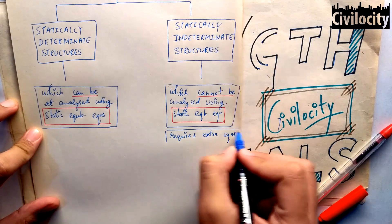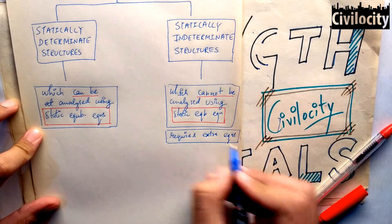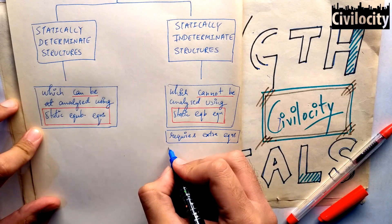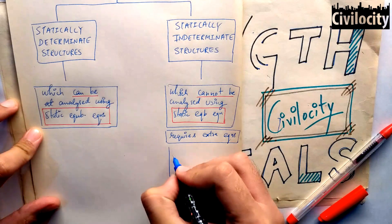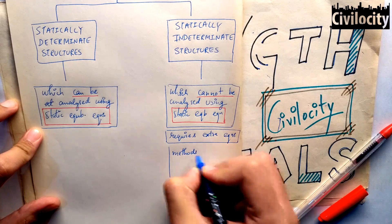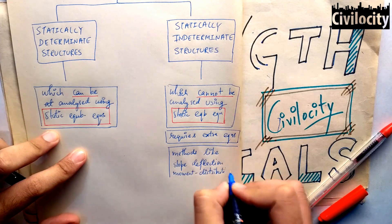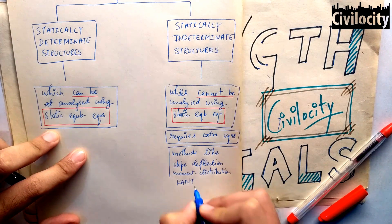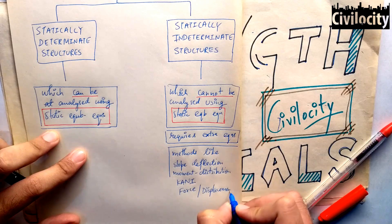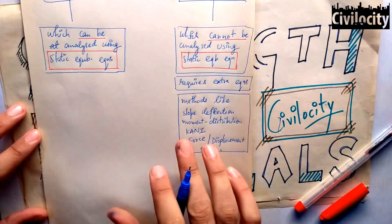Indeterminate structures need extra equations like slope, deflection, or rotation equations and different methods to analyze — like the slope deflection method, moment distribution method, Castigliano's method, force method, displacement method, and so on.